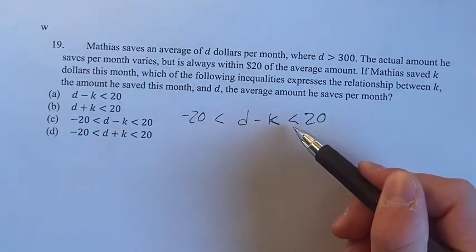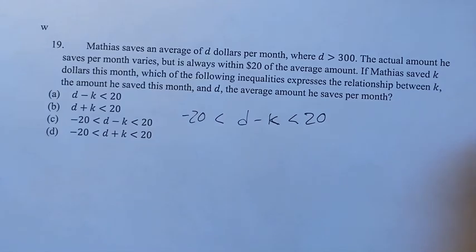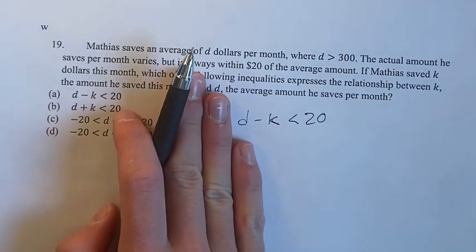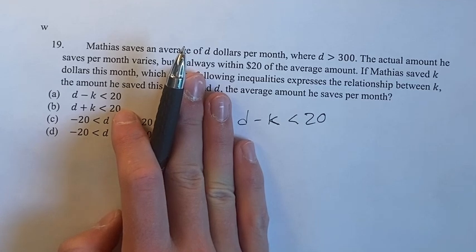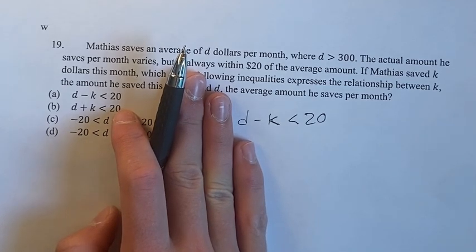Why is the difference not just less than 20? You might expect this when you're looking at this problem. You might say, okay, it's within $20 of the average amount, therefore the difference between them is less than 20.